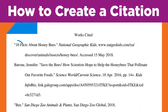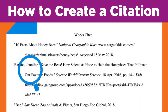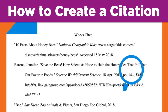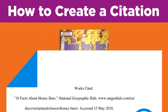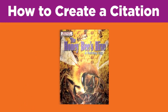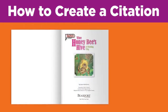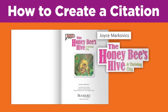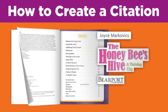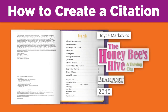To cite means to identify the sources you used in your work. Basically, you write down the details that will help someone else find the source. For example, if you're using the book The Honey Bee's Hive, you'll need to record or write down the following details from the title page and the verso, or back of the title page: the author, Joyce Markovics; the complete title, The Honey Bee's Hive: A Thriving City; the publisher, Bearport Publishing; and the publication date, 2010.